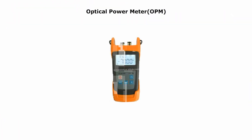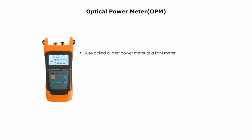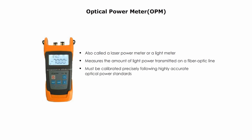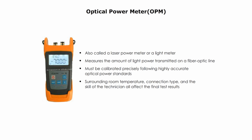OPM is short for optical power meter. It is also called laser meter or light meter because it measures the amount of light power transmitted on a fiber optic cable. Using OPM can be very easy, but it must be calibrated precisely following highly accurate optical power standards. Surrounding room temperature, connection type, and skills of a technician all affect the final test results.